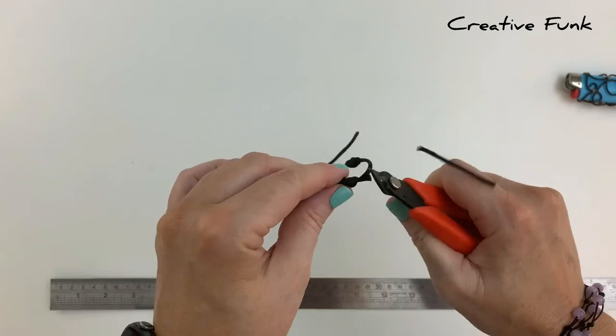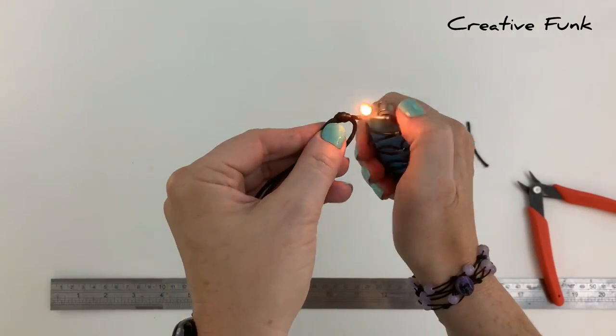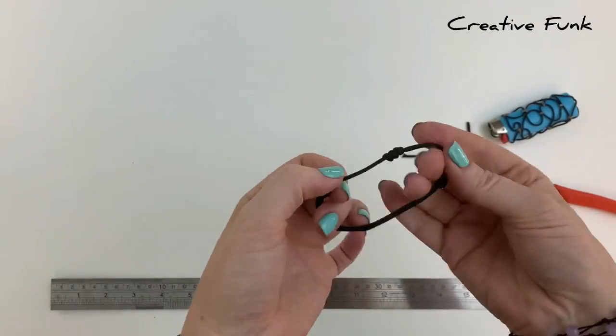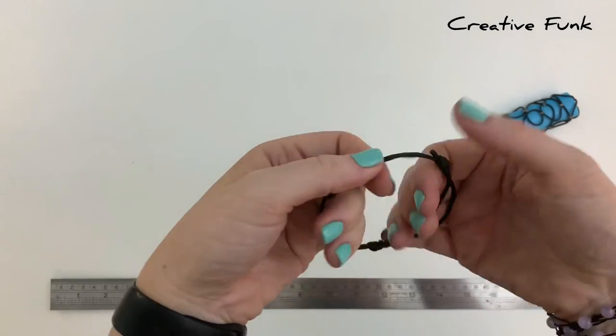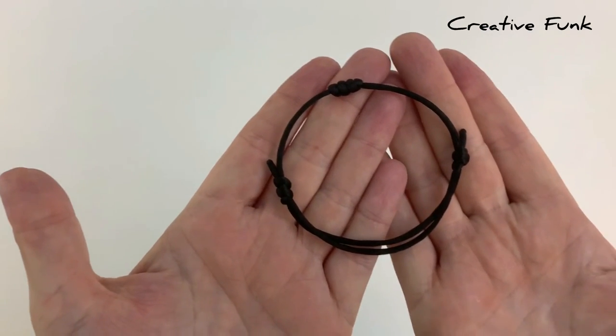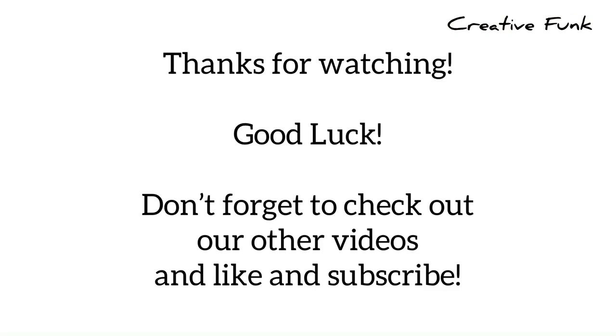I leave about a centimeter outside the knot and then singe the end as well so it doesn't fray. There's your simple sliding knot bracelet with barrel knot detail.